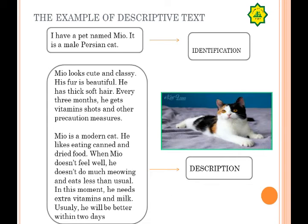Okay, you can see in the video there is a text. Example Descriptive Text: 'I have a pet named Mio. It is a male Persian cat. Mio looks cute and classy. His fur is beautiful. He has thick hair. Every three months he gets vitamins, salt, and other precautionary measures. Mio is a modern cat. He likes eating canned and dried food. When Mio doesn't feel well, he doesn't do much. Mio whines and eats less than usual. In this moment he needs extra vitamins and milk. Usually he will be better within two days.'